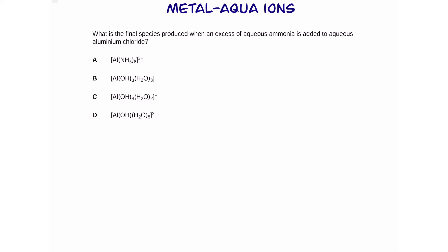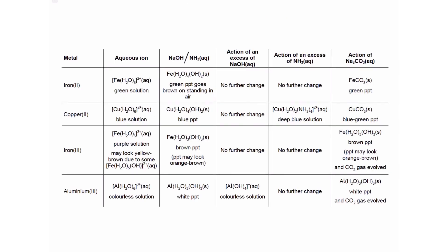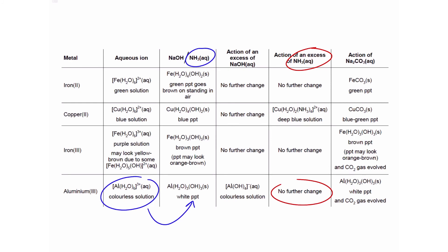What is the final species produced when excess aqueous ammonia is added to aqueous aluminium chloride? The aluminium forms a hexa-aqua ion. When a little ammonia is added, a white precipitate forms. When excess ammonia is added, there's no further change — we stay with the white precipitate. That white precipitate is the final species.